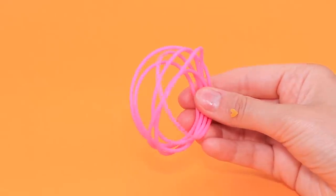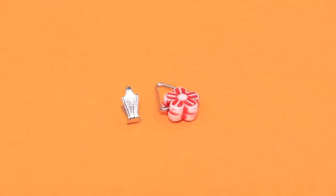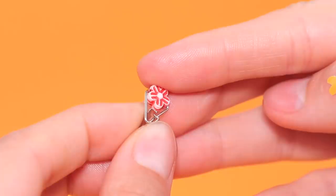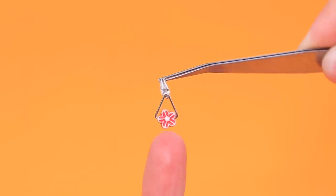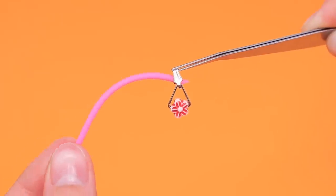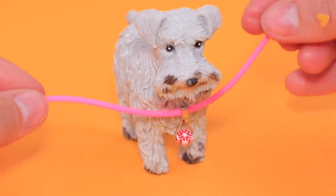Make a leash and a collar out of piping, a carabiner, and a pendant. Attach the pendant to the carabiner. Put a cord through. The dog will love it!